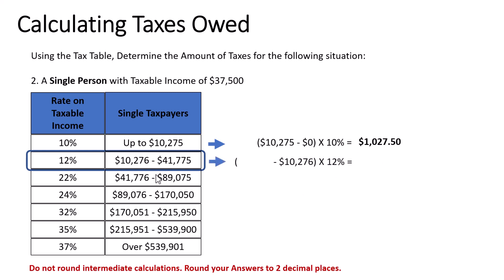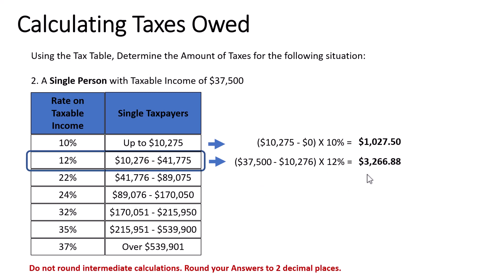Moving to the 12% bracket: since this is the final bracket, we use the taxable income as the upper amount, so that's $37,500. We subtract $10,276, then multiply by 12%, and we get $3,266.88. The last step is to add these two numbers up, and we get $4,294.38.